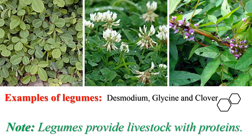Examples of legumes include desmodium, glycine, and clover. Legumes are very important to animals because they provide protein for the body — specifically for the repair of worn-out tissues in these animals.